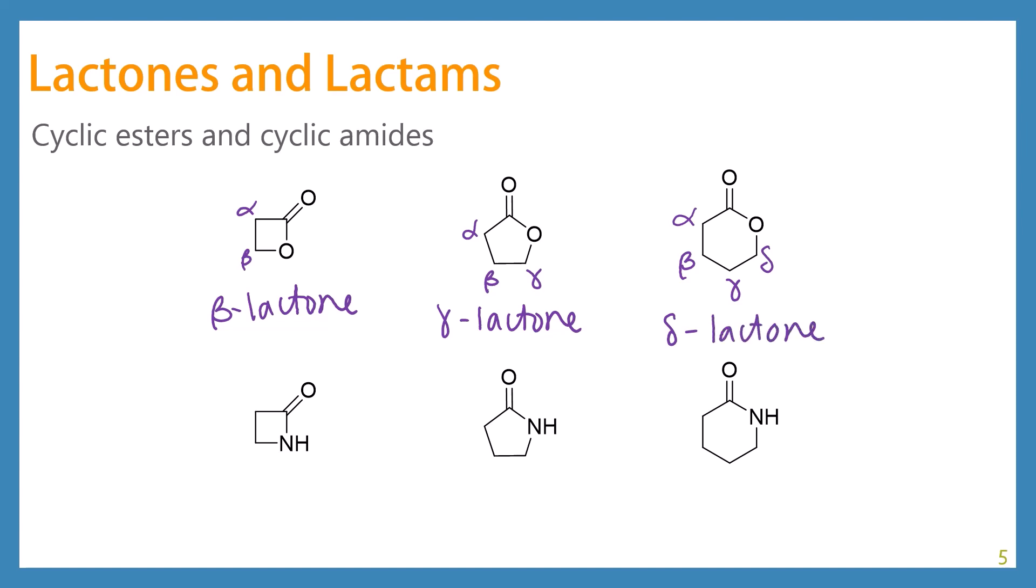And you use the exact same naming system for amides. Alpha, beta, this is a beta lactam. Alpha, beta, gamma, this is a gamma lactam. Alpha, beta, gamma, delta. This is a delta lactam.